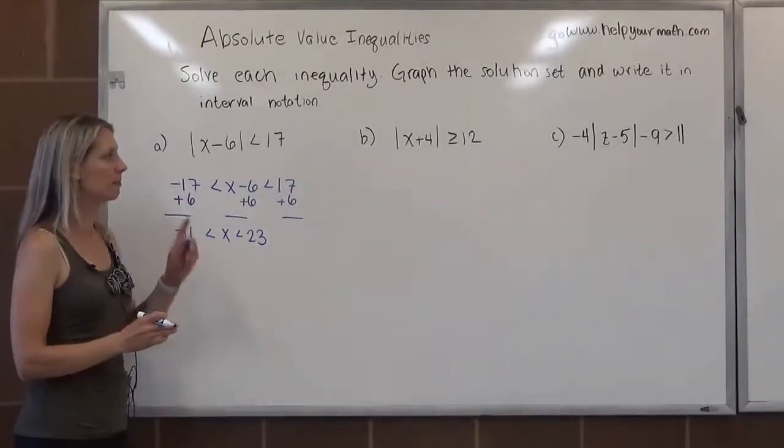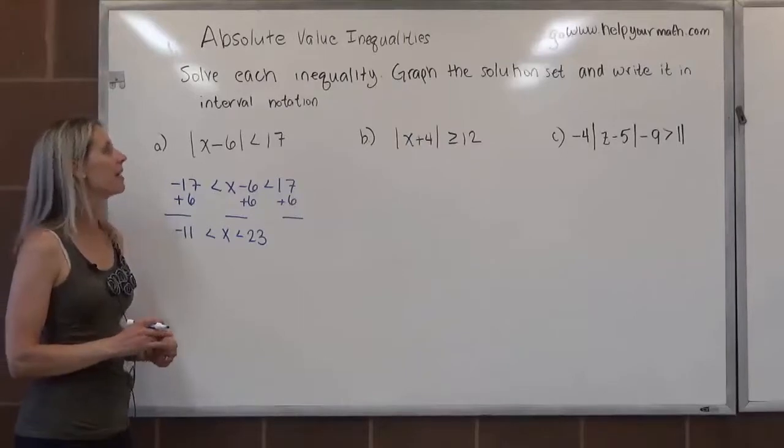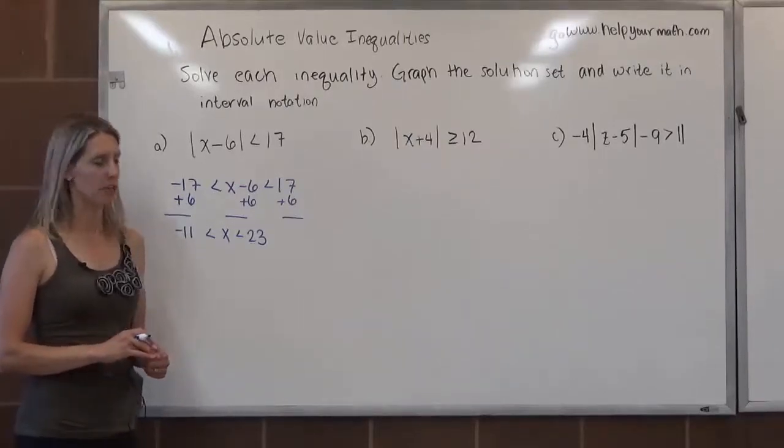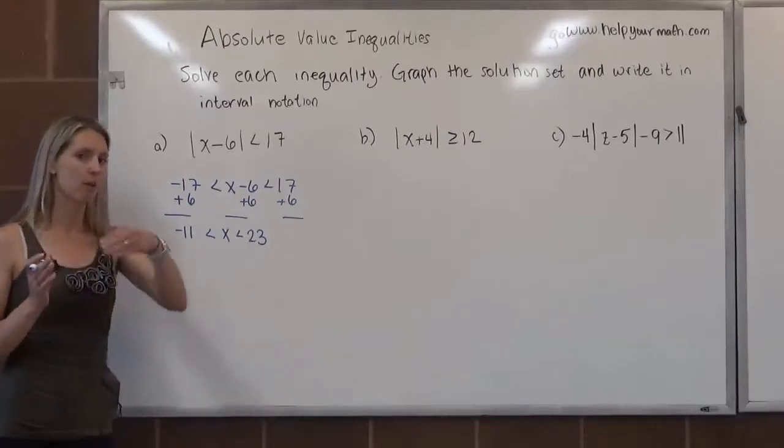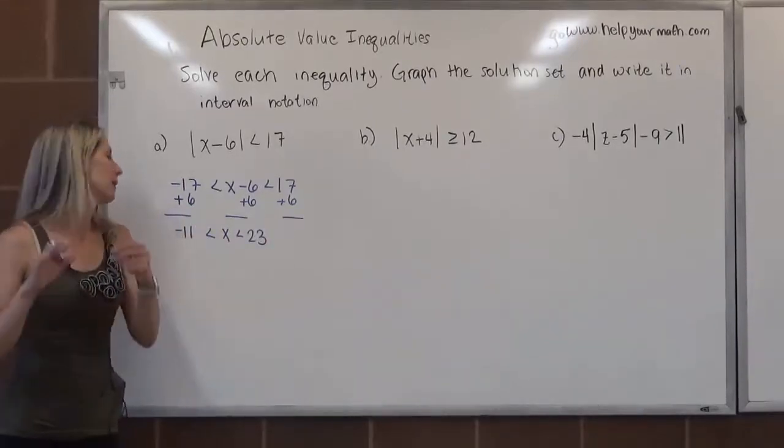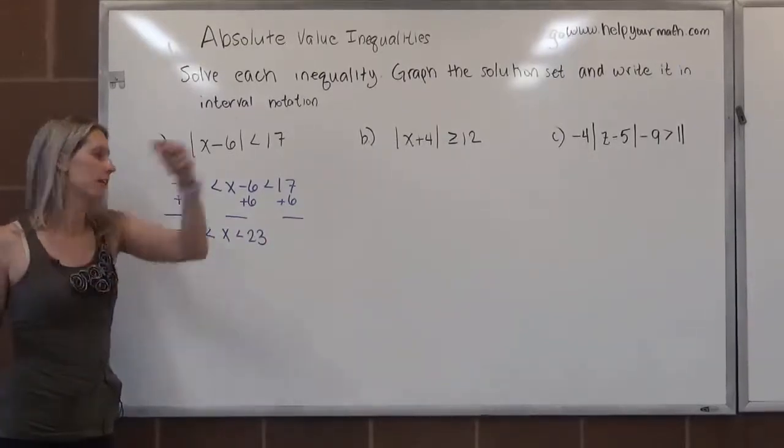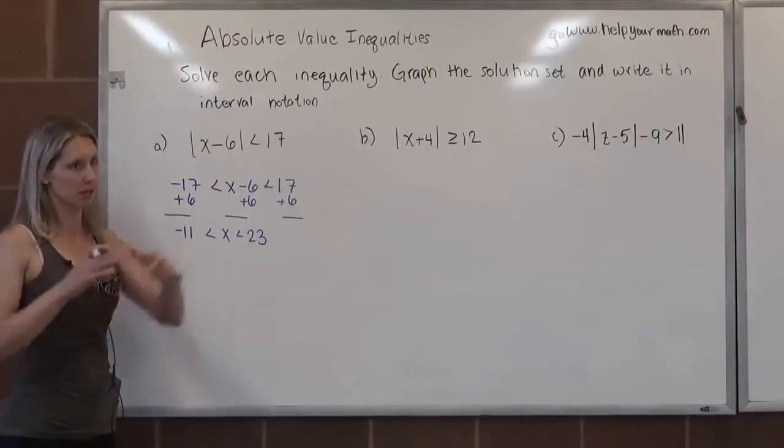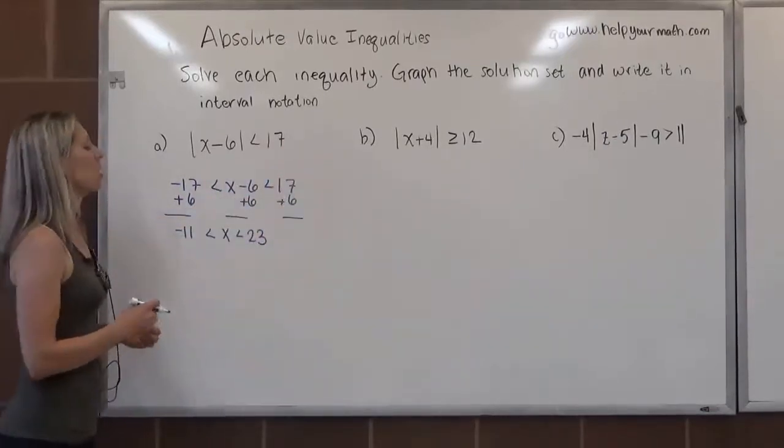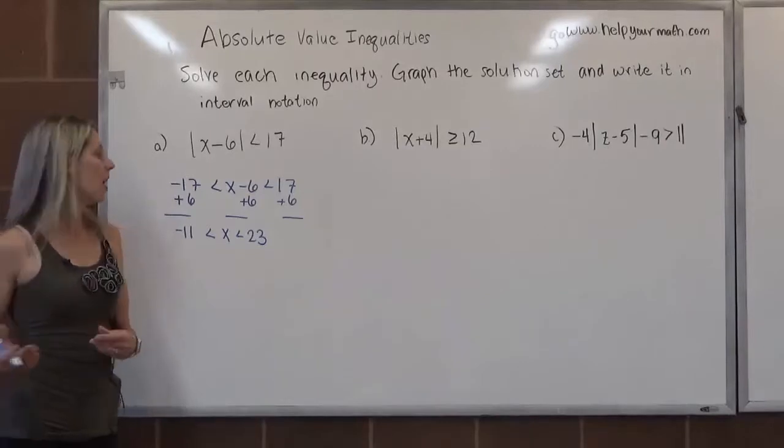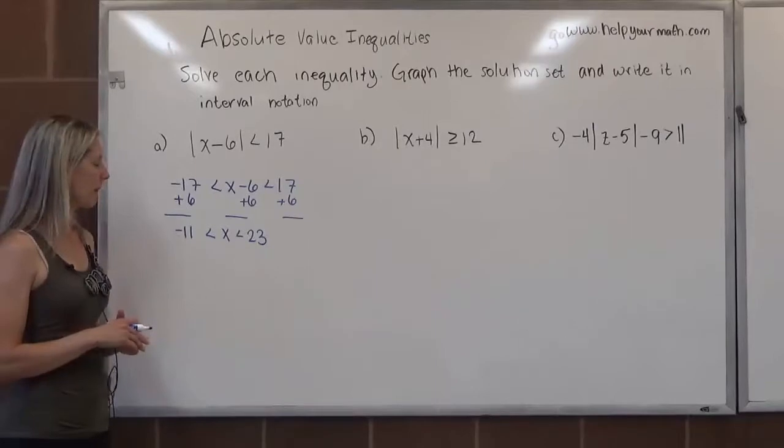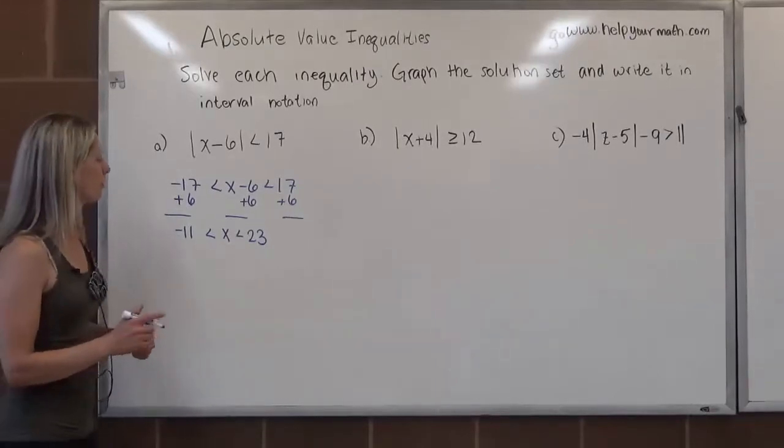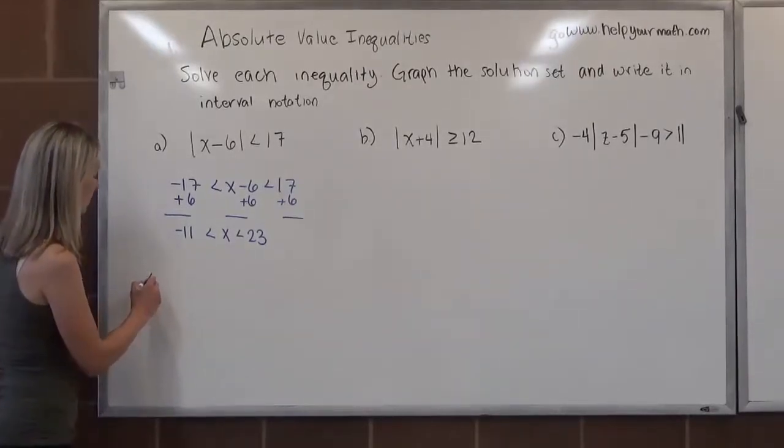That part's done, but we still have two more pieces left. First we need to graph, then we need to write it in interval notation. Now this graph could be really long. If I count in increments of 1s, then I would have to go at the very least negative 11 up to 23, which is a lot of number line. So I can be smart about this. I can count by 2s.